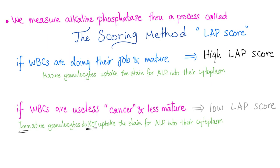This enzyme, alkaline phosphatase, is measured through a process called the scoring method, or LAP score. If white blood cells are doing their job and they are mature, we will have a high leukocyte alkaline phosphatase score, because mature granulocytes will take up the stain for ALP into their cytoplasm. But if white blood cells are less mature, such as in cancer like chronic myeloid leukemia, you will have a low LAP score. Immature cells cannot take up the ALP stain into their cytoplasm as much as mature cells can.